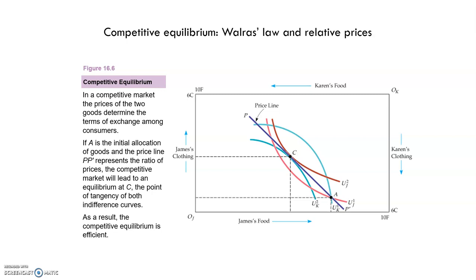We can show how competitive markets lead to efficient exchange by using the Edgeworth box to mimic a competitive market — the perfect competition we studied in the first chapter. This slide shows the opportunities for trade when we start at the location given by the point A. When the prices of both food and clothing are equal to 1 — not the actual prices but the relative prices, which is the price of one good divided by the price of the other good — then the relative prices will be 1. So the actual prices don't matter; what matters is the price of food relative to the price of clothing.